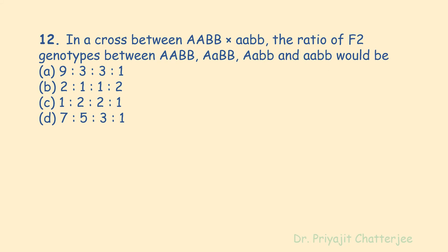The next question: in a cross between AABB and aabb, the ratio of F2 genotypes — AABB : AaBB : AaBb : aabb — would be? The correct answer is 1:2:2:1. The genotype is the genetic makeup of an individual; this may refer to one trait or a combination of many traits of the individual.